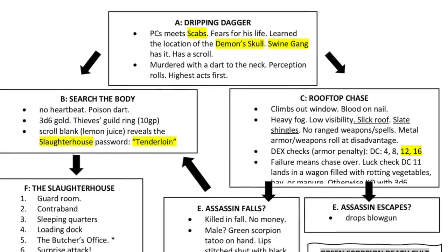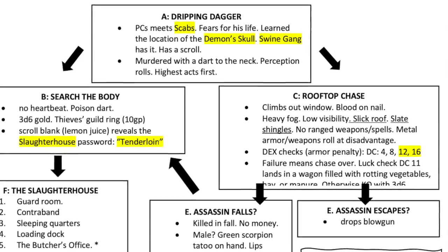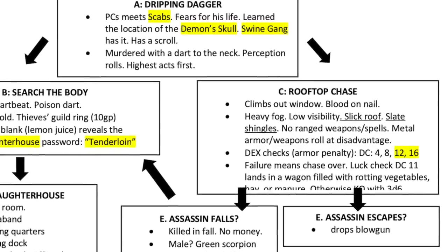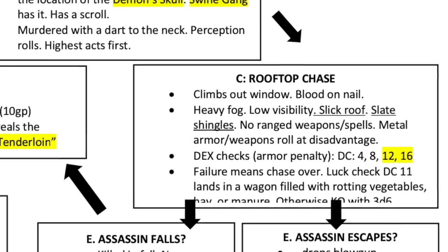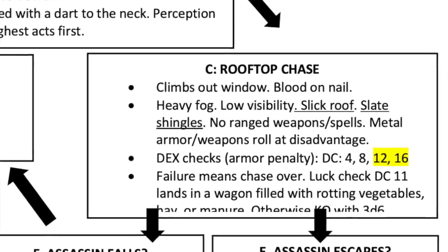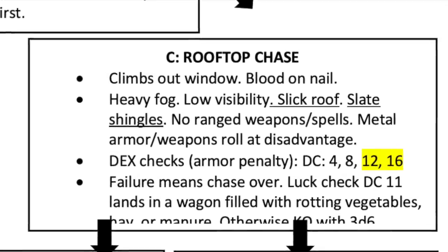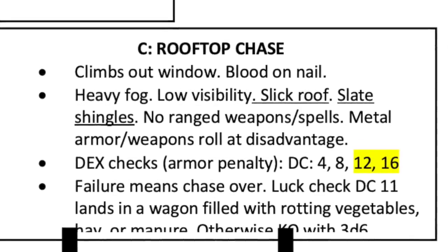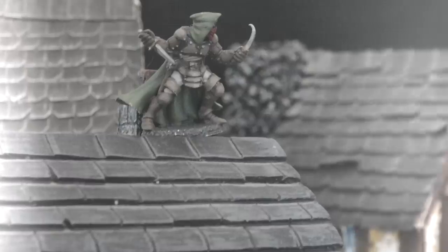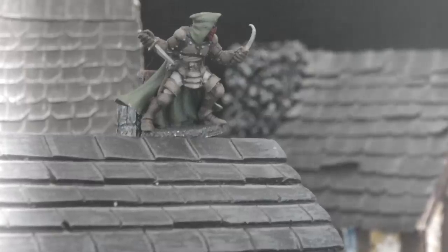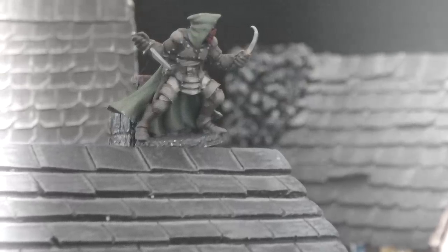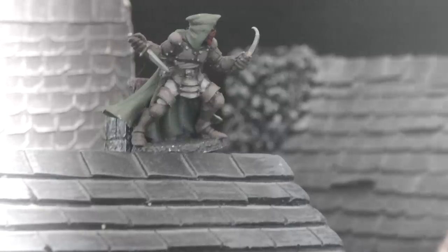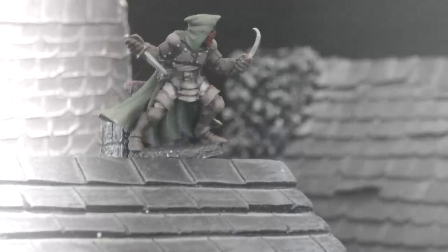If the characters pursue through the back door, they go up a staircase to the second level. There's an open window at the top with a bloody nail and fresh blood — they should conclude the assassin left that way. Outside is heavy fog with low visibility; no weapons or spells will be effective because you can't see that far. They can hear the assassin's boots running away and have moments to decide whether to pursue.